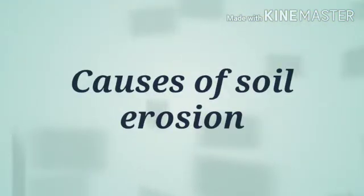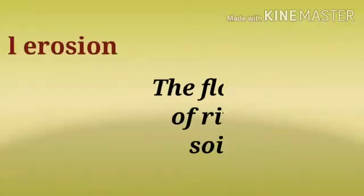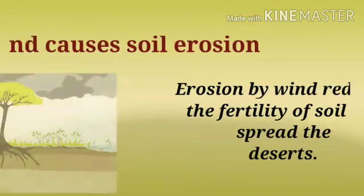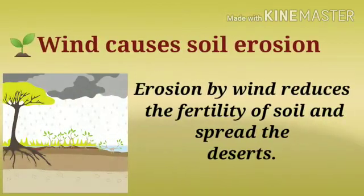Causes of soil erosion: First, the flowing water of rivers causes soil erosion. Second, erosion by wind reduces the fertility of soil and spreads the deserts.